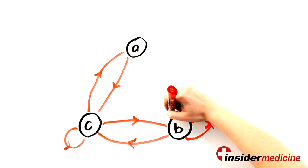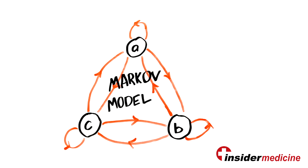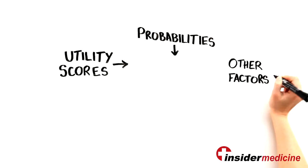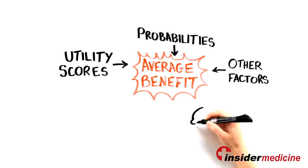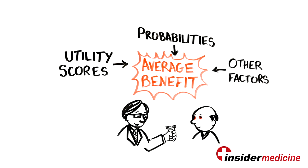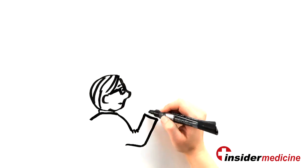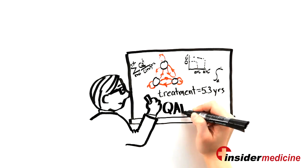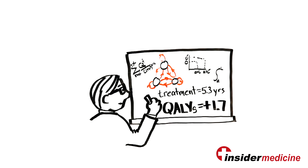Using a mathematical model called a Markov model, we combine the utility scores and probabilities and other factors to determine the average benefit to someone with the disease who takes the drug which we are evaluating. We calculate that benefit over the course of the treatment and end up with the increase in QALYs caused by the drug.